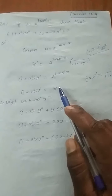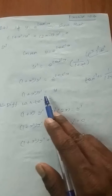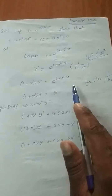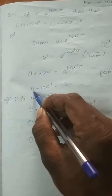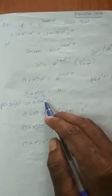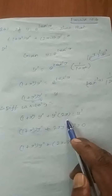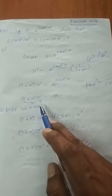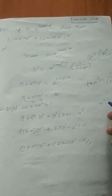Now, again differentiating (1 + x²)y' = y with respect to x — that means one more time differentiating. This is a product (uv concept): first term is u, second is v. U stable, v differentiate; then v stable, u differentiate. So (1 + x²) stable, y' differentiated gives y''. Then y' stable, (1 + x²) differentiated — constant 1 gives 0, x² differentiated gives 2x, so derivative is 2x.